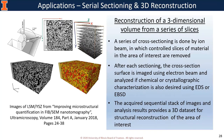There is also 3D serial sectioning and 3D reconstruction, also called 3D tomography. A series of cross-sections is done by the ion beam, in which controlled slices of material in the area of interest are removed. After each cross-section, the surface is imaged using the electron beam and analyzed for chemical or crystallographic information if the right detectors are available. The acquired sequential stack of images and analysis results provides a 3D dataset for structural reconstruction.